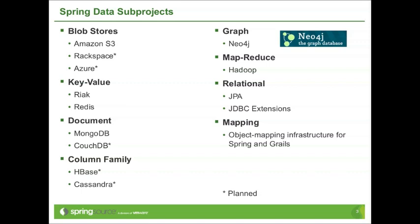These are the subprojects that we have planned and are currently under development, categorized roughly by data model type. You might be familiar with Amazon S3 or Blobstores — there's a small project to interact with the Blobstore to get and retrieve information. Moving on to more traditional NoSQL databases, we have support for key-value databases for Riak and Redis, for document databases such as MongoDB with CouchDB planned. Also planned is integration with column family databases such as Cassandra and HBase. And the focus of this talk is the graph database Neo4j.